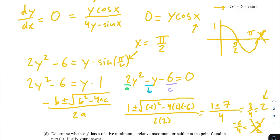So our final answer for this problem is (pi over 2, 2) — that is the coordinate where the tangent line is horizontal.